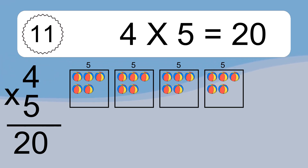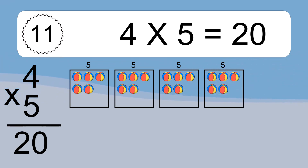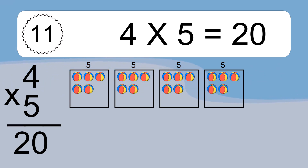4 times 5 equals what? If you count all the balls in all the boxes together, you will have 4 times 5 balls. This equals 20 balls.